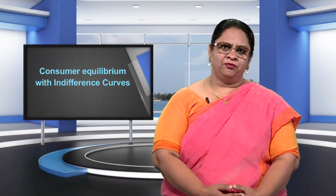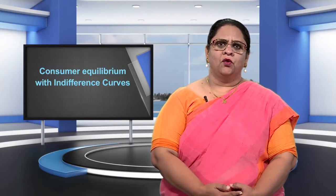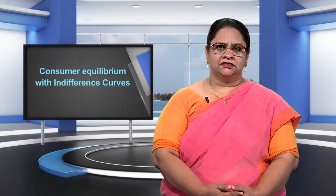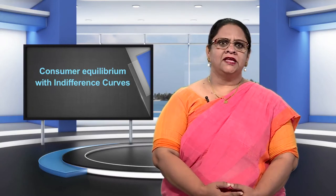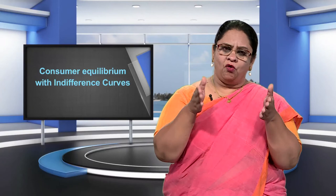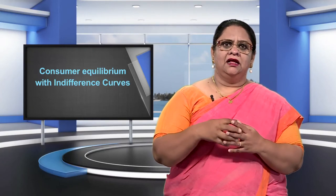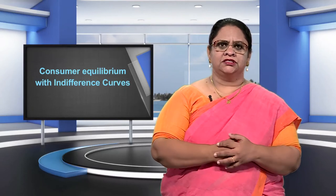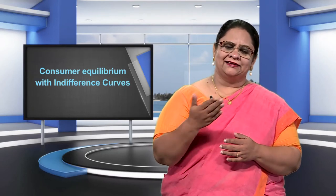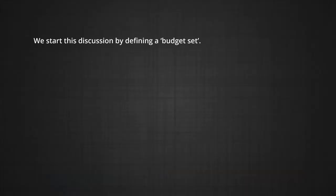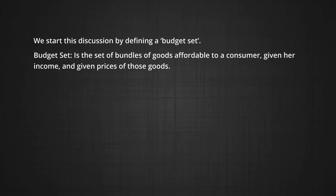As a first step, we assume that a consumer can only spend what she earns. So the amount that she buys depends on her budget or on her income. To be more precise, it depends on the prices of goods available in the market and her income. We start this discussion by defining a budget set — a set of bundles of goods affordable to a consumer, given her income and given prices of those goods.